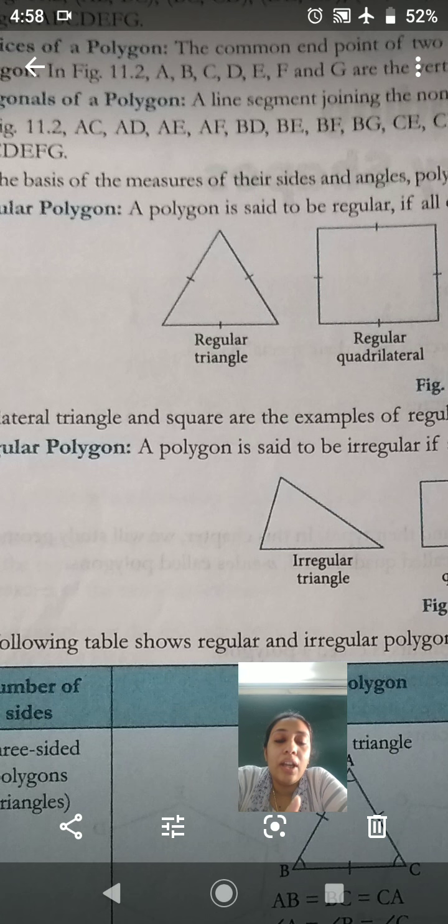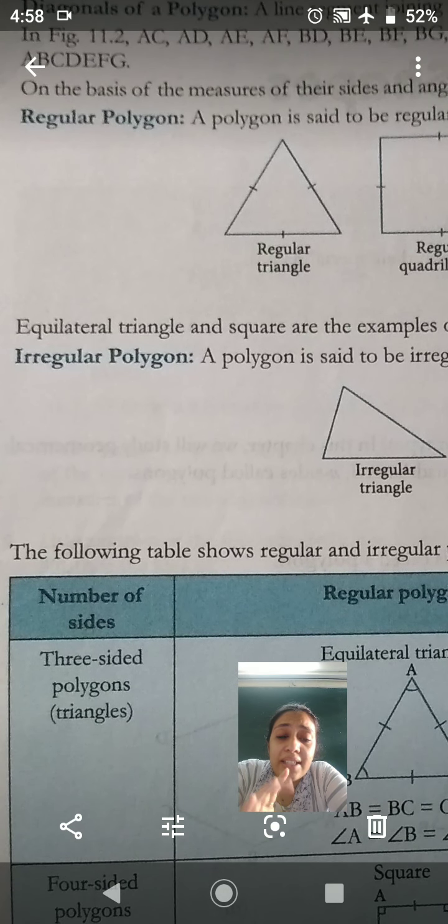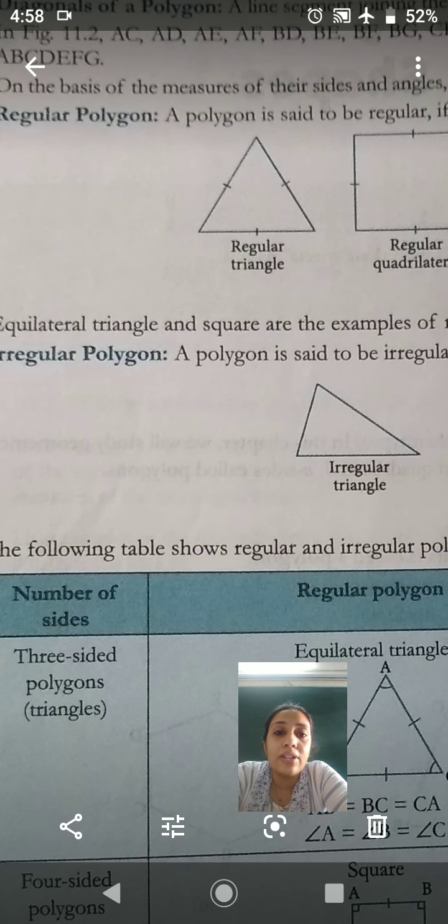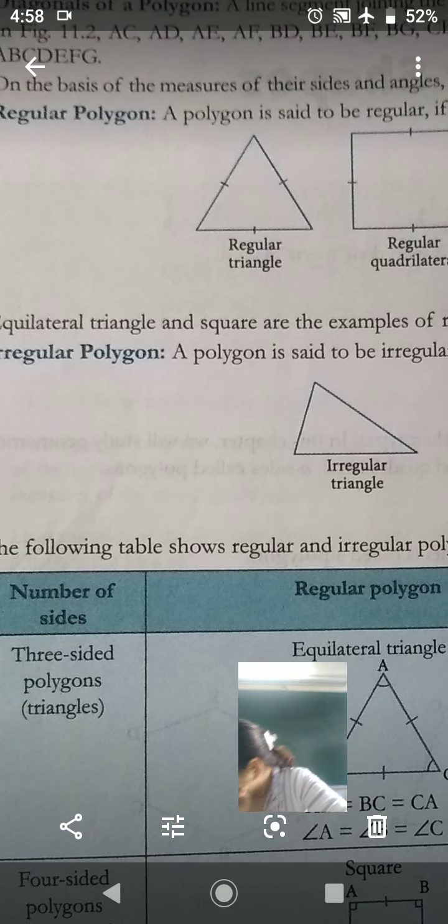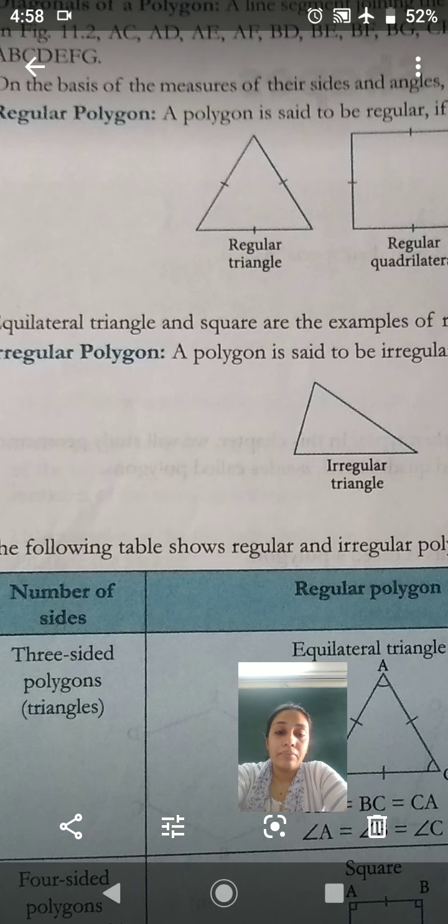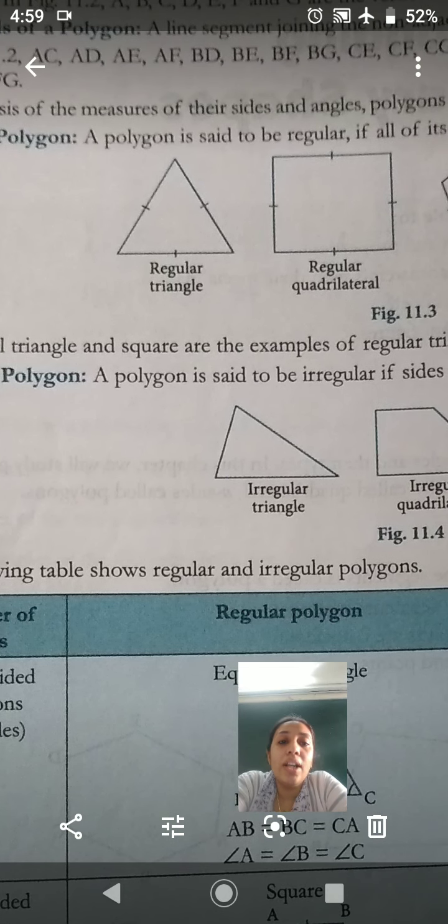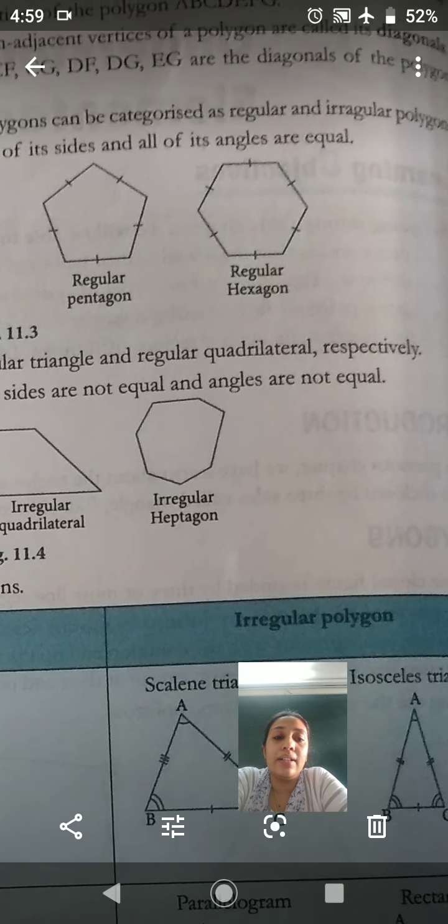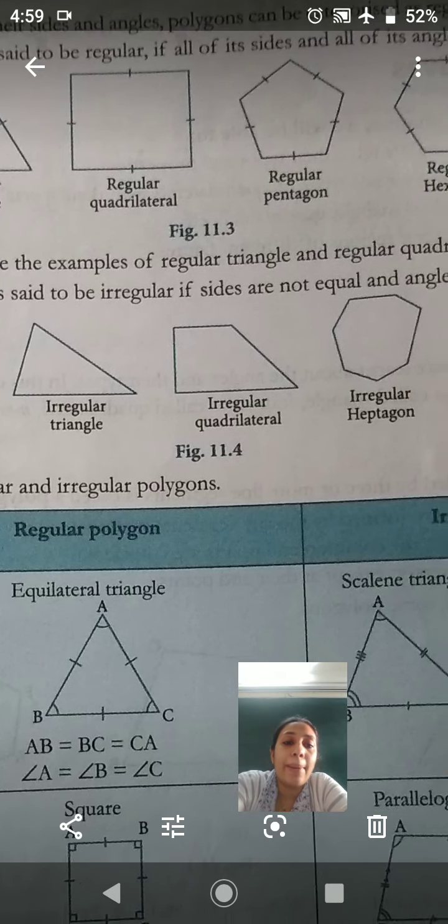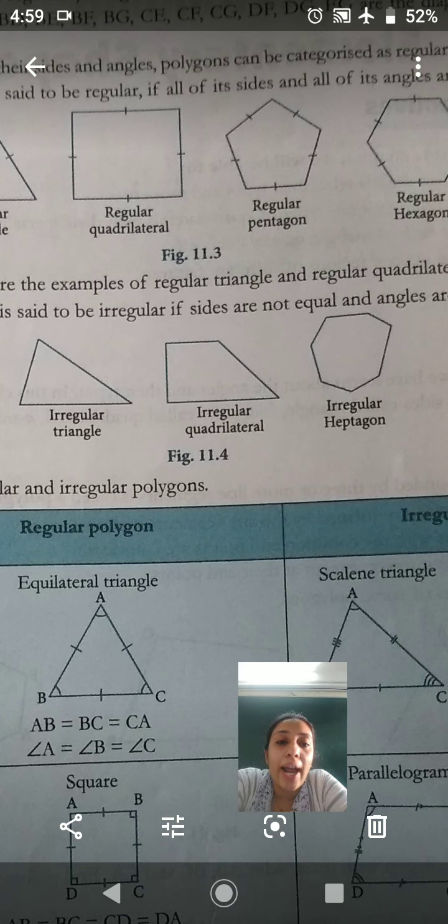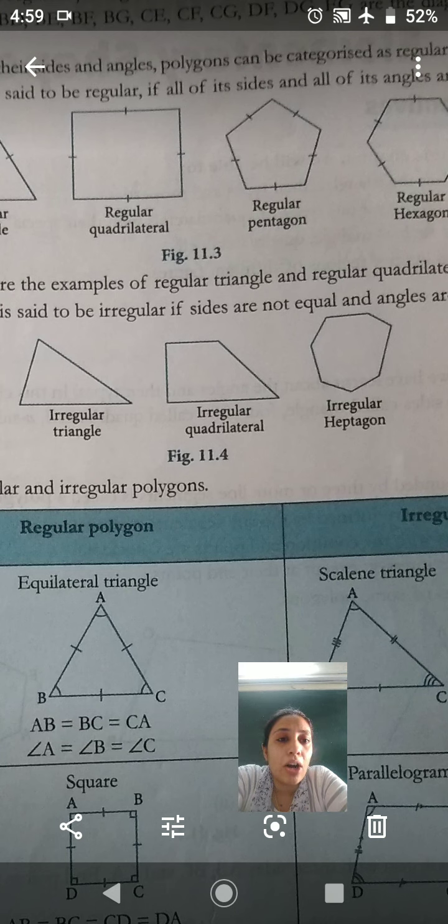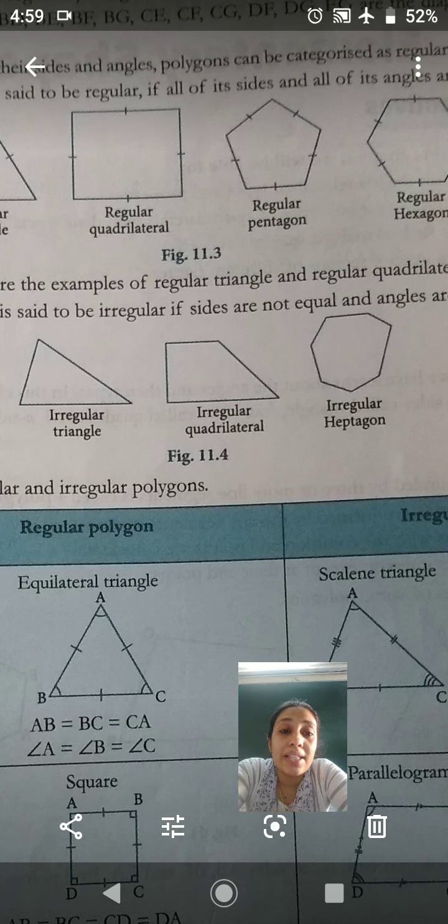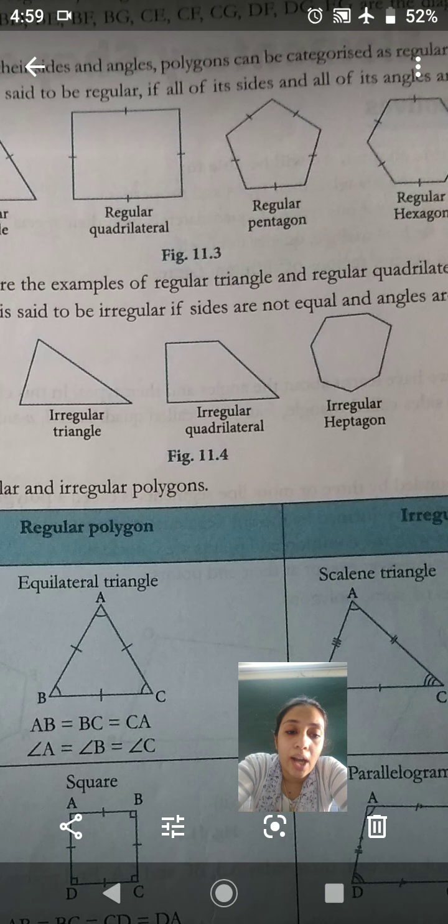But when the sides and angles are not equal, then it is called irregular polygon. A polygon is said to be irregular if sides are not equal and angles are not equal. Look, here all shown are irregular. This is irregular triangle, quadrilateral. Quadrilateral has four sides, right? Then there is heptagon, whatever it is. If equal length, equal size is not there, if its sides are not equal, angles are not equal, then those are called irregular polygons.